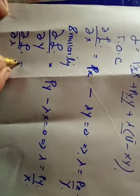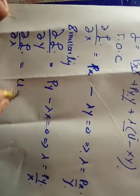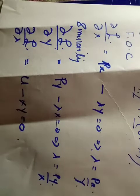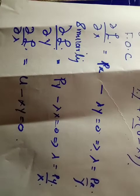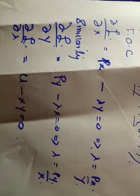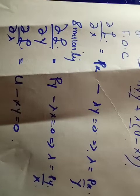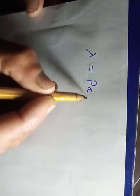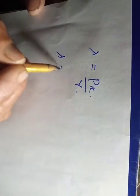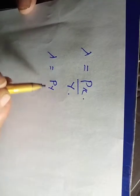Now taking the partial derivative with respect to lambda, we get U minus x·y equal to 0. As we have three choice variables — x, y, and lambda — we took partial derivatives with respect to each of these choice variables. Lambda equals px divided by y, and the second lambda equals py divided by x.